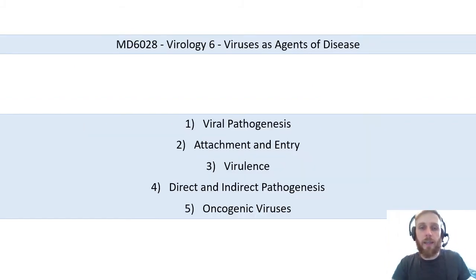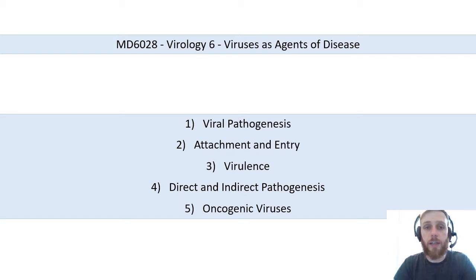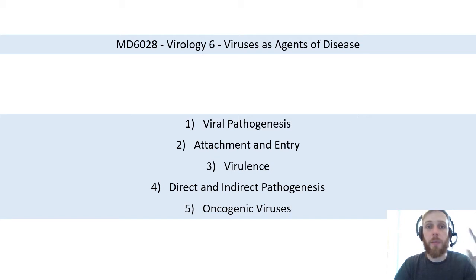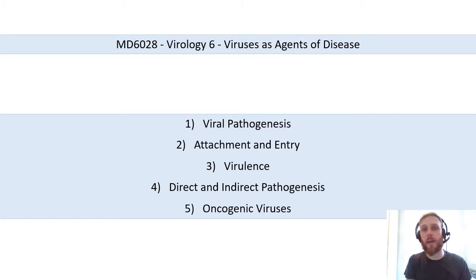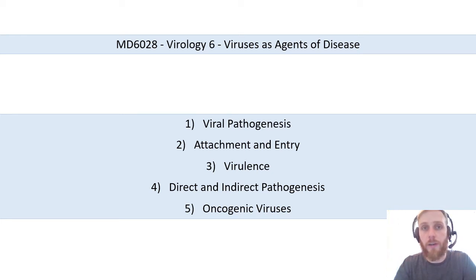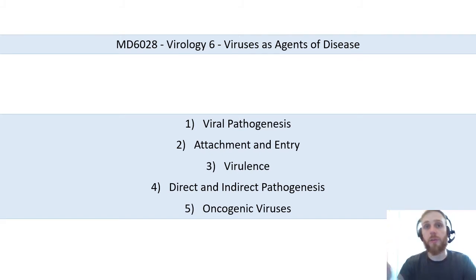Here are the key areas we'll work through: first, establishing definitions relating to viral pathogenesis; then specific stages of the life cycle particularly relevant to disease, namely attachment and entry; then virulence; then direct and indirect pathogenesis; and finally oncogenic viruses — the ability of specific viruses to cause transformation of cells, which is a process that leads to cancer formation.